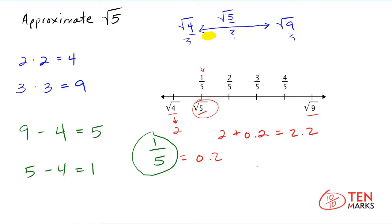If you go ahead and calculate the actual value of the square root of 5, you get something like 2.24..., continuing on forever because it's irrational. Look how close these numbers are — when you approximated using this method, you got pretty close to the actual answer. So this is a good method for approximating the value of any non-perfect square. In this lesson, you've learned how to approximate the value of an irrational number. Thanks for watching.